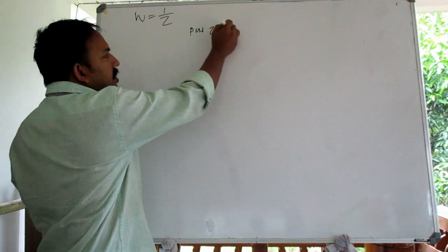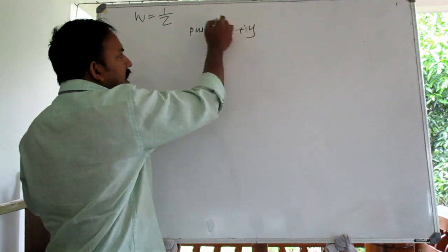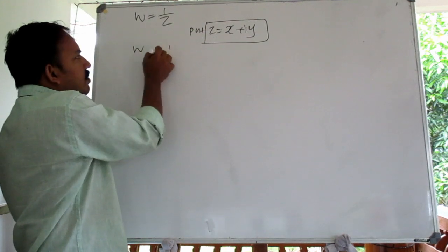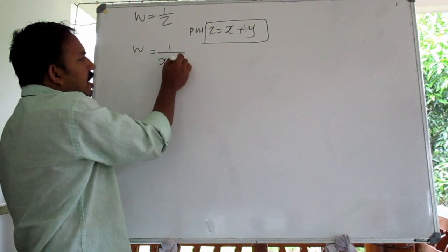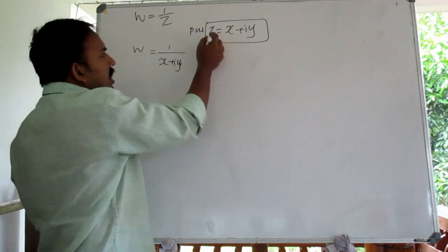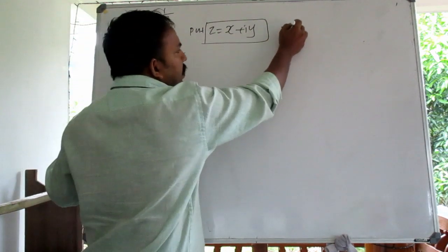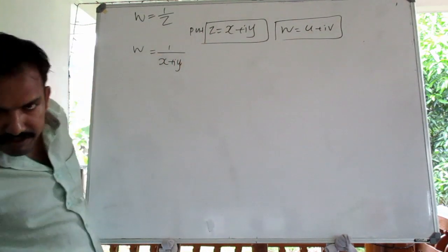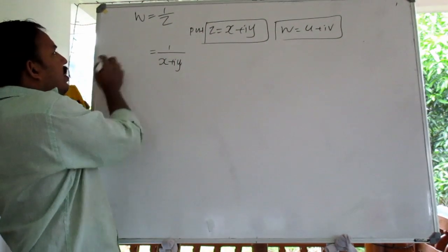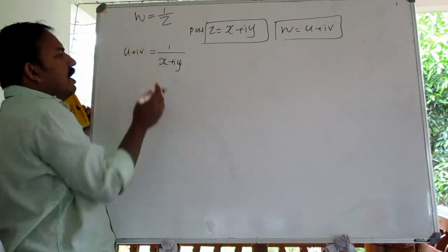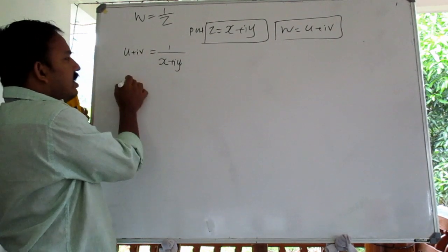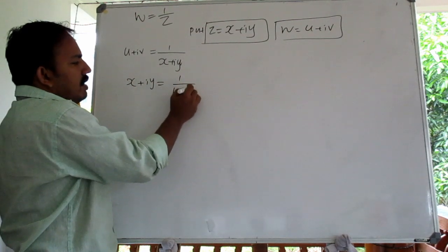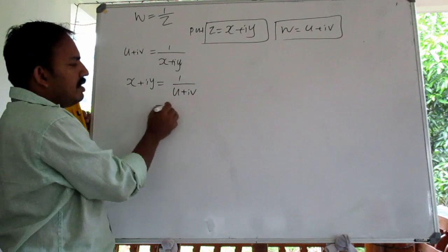We let z equal x plus iy. We select W equals 1 by z, so x plus iy is equal to 1 by u plus iv.